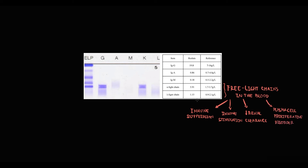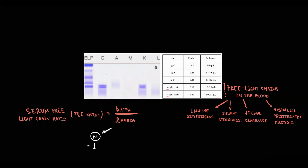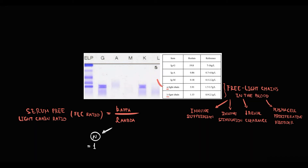For this reason, in multiple myeloma we determine the serum free light chains ratio, which is the ratio of kappa to lambda light chains. Normally, when plasma cells produce normal immunoglobulins, kappa and lambda light chains are produced in equal amounts, so the free light chains ratio is normal. But in multiple myeloma, because malignant plasma cells can produce just one type of light chain — either kappa or lambda — increasing the amount of just one subtype, kappa for example, will result in an abnormal free light chains ratio.